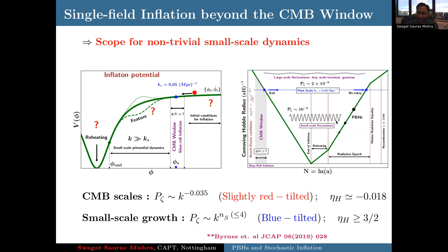For that, what we need is that the power spectrum is almost scale invariant, slightly red-tilted in the CMB window. However, on small scales, they have to be highly blue-tilted, at least for a while, so that their power can rise from a small value to a large value. This could be achieved by having an interesting feature which changes the dynamics during inflation.